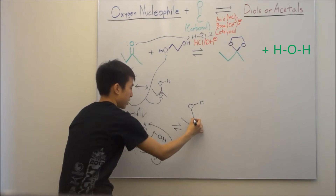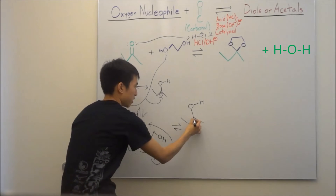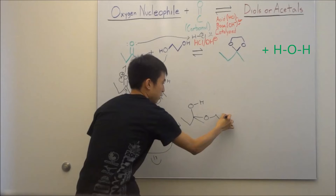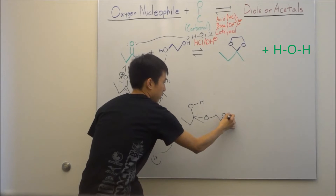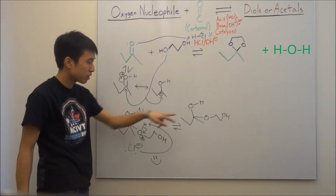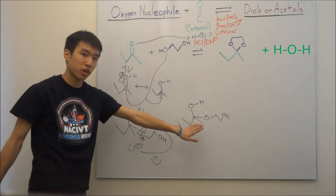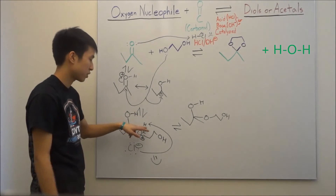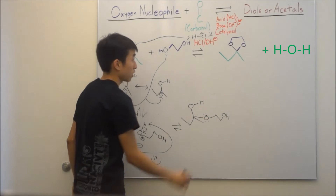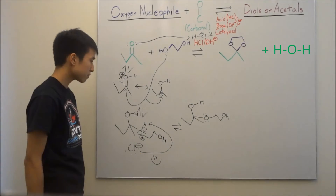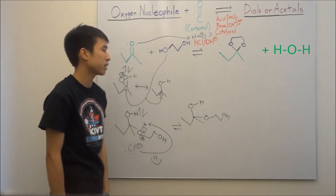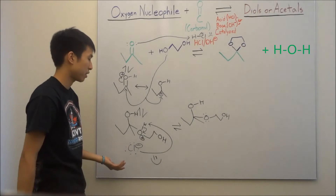You should now get this molecule — O, O, like this. This should be what you got, because we lost the hydrogen, so there's no more charge. The electrons went to the oxygen, satisfying it. But we're not exactly at our cyclic acetal yet. So how do we get there?